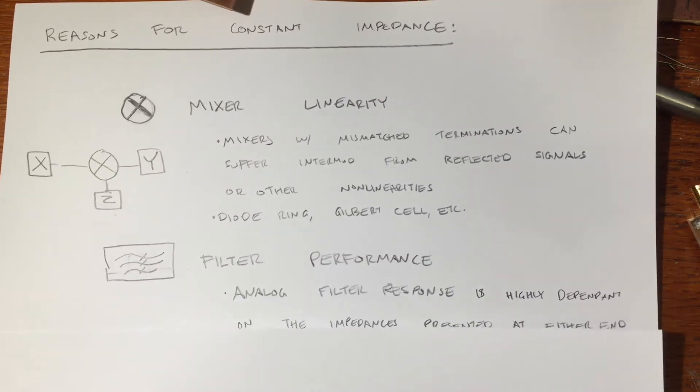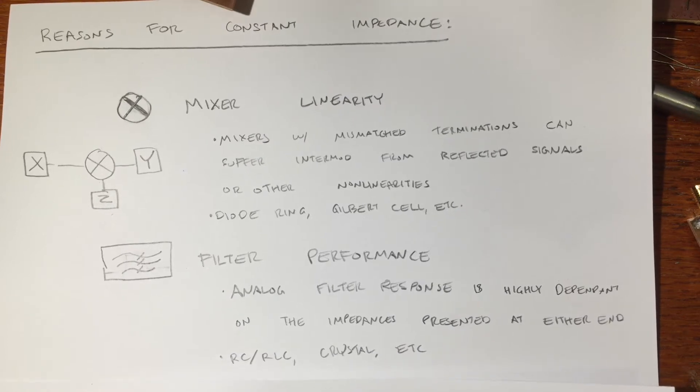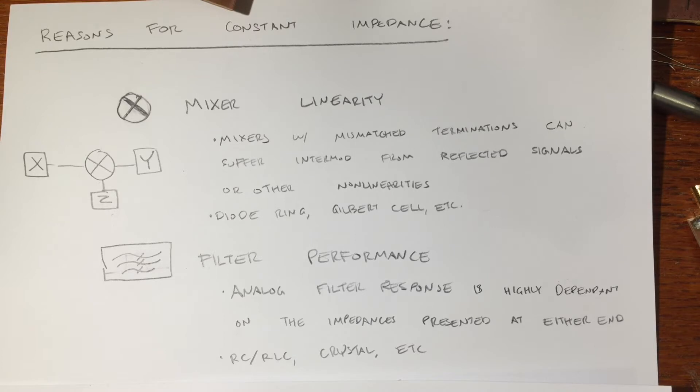Another circuit block that benefits from impedance matching is any kind of analog filter. An RC filter, RLC filter, crystal filter, are all sort of dependent on having the proper impedance matching on their inputs and their outputs. The characteristics of those filters, the bandpass ripple, the cutoff frequency, the steepness of the skirts, all assume that they're operating within an environment that has a consistent specific impedance. And being able to provide that impedance within an amplifier block can be useful.